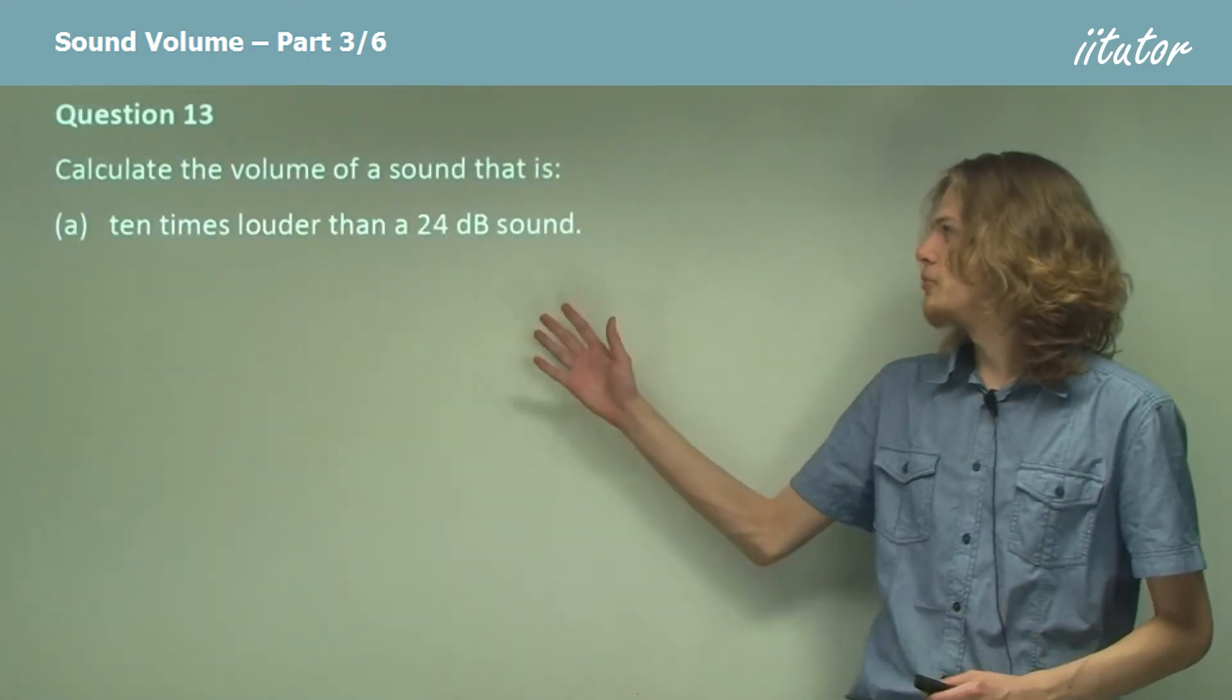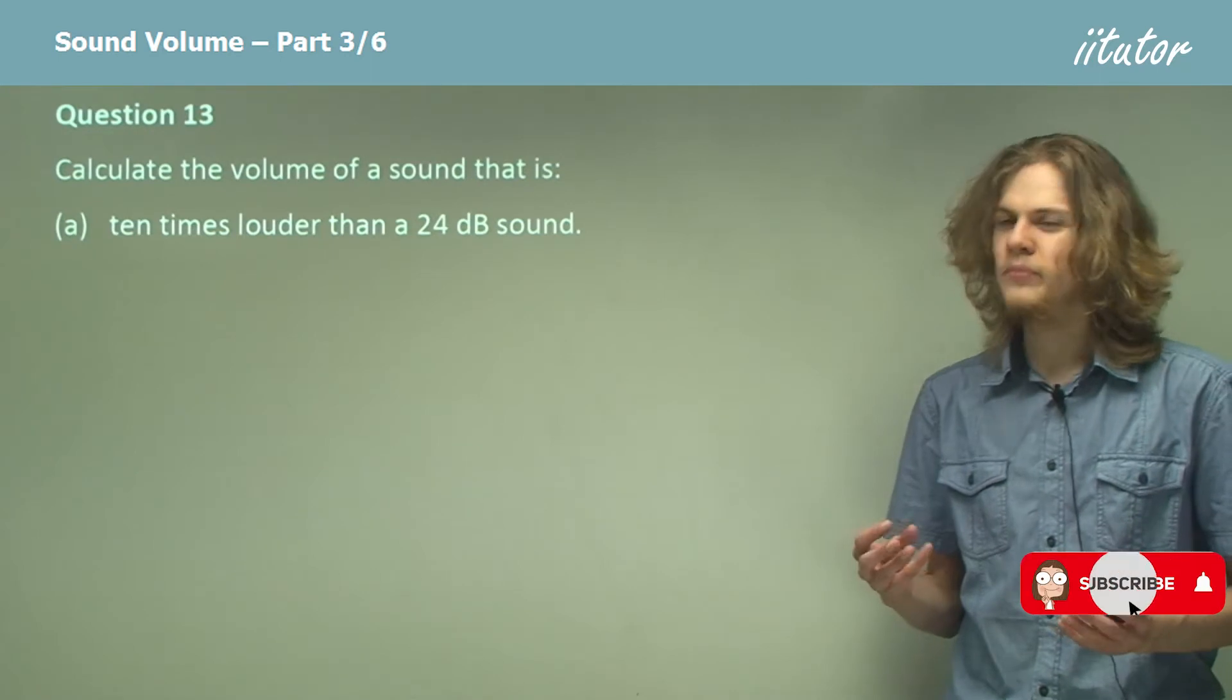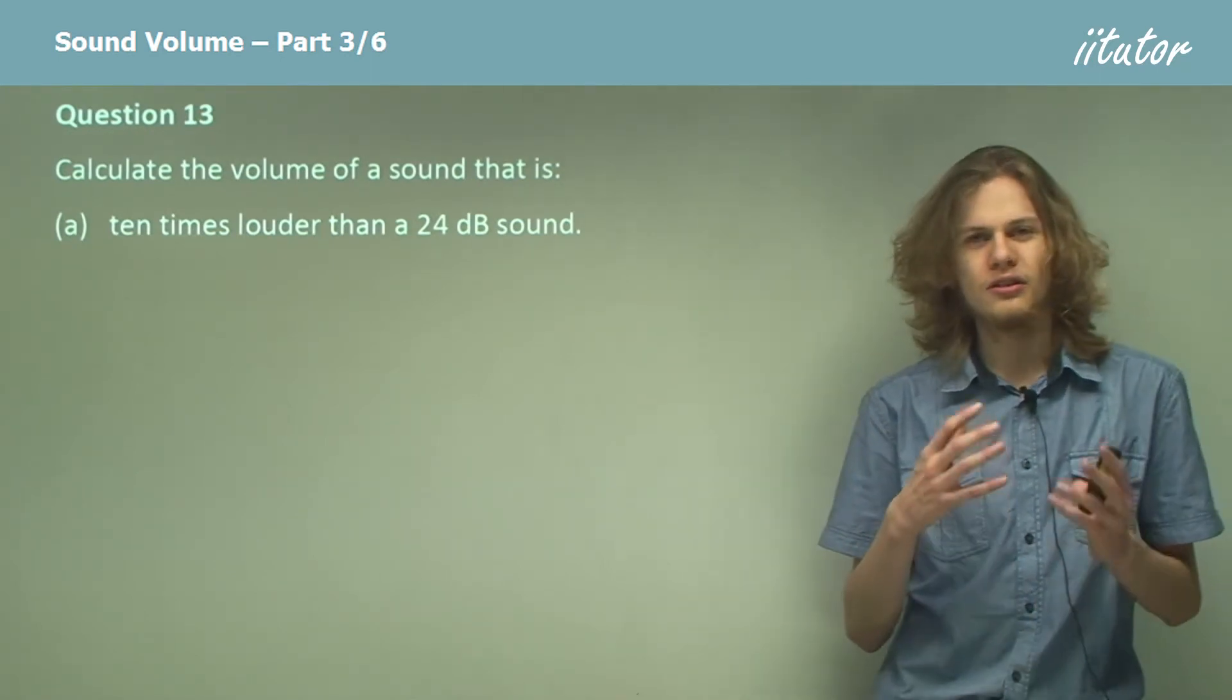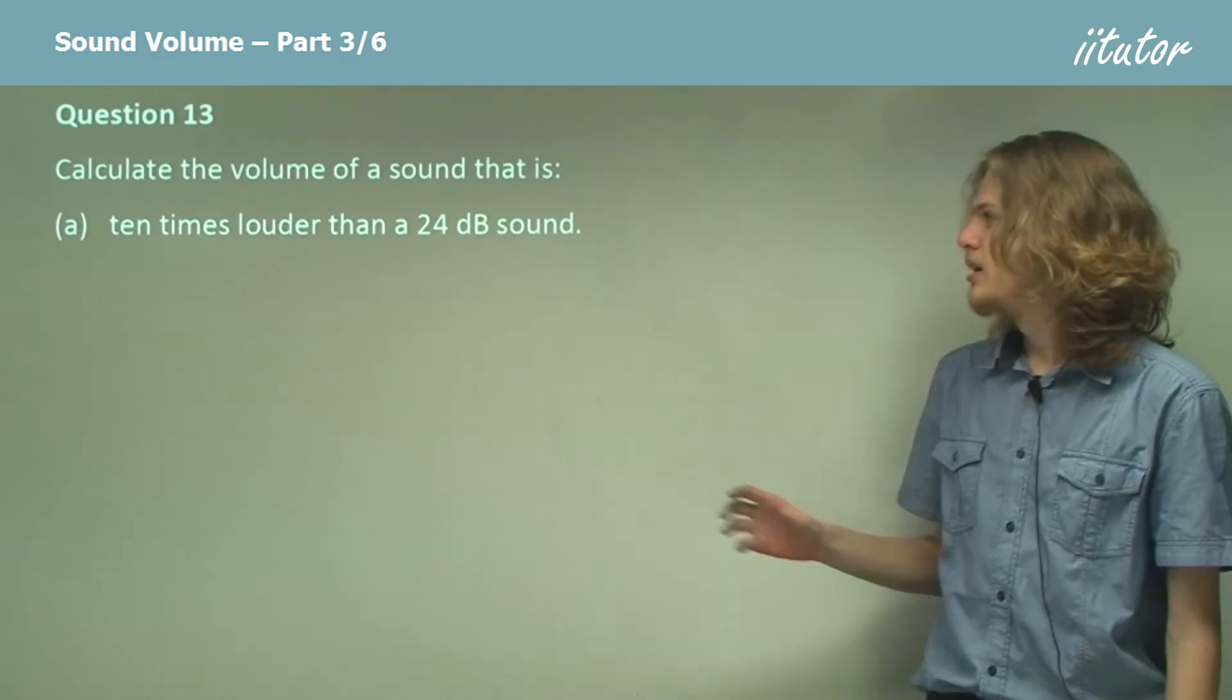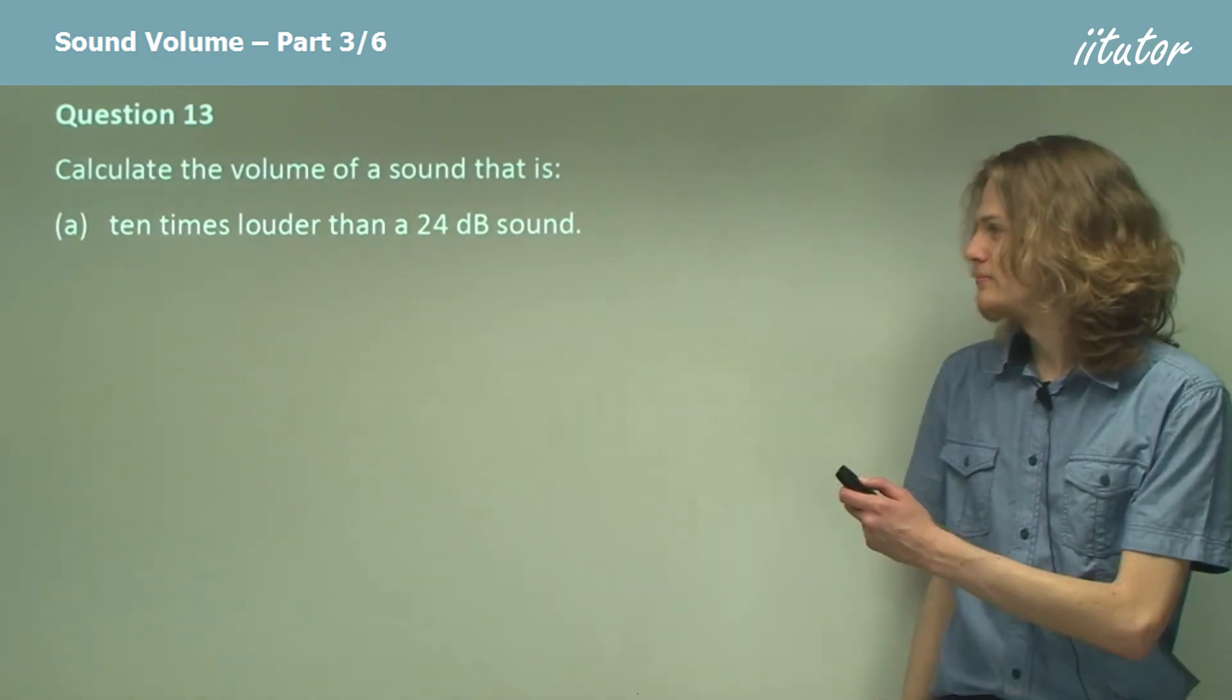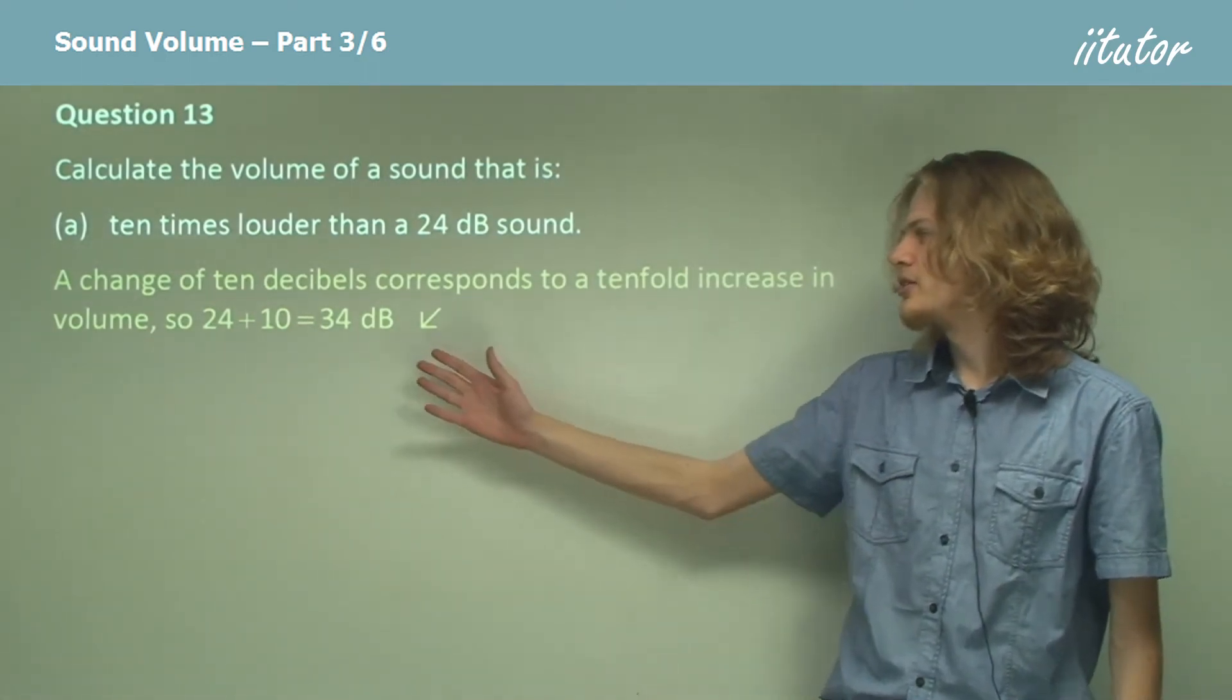Calculate the volume of a sound that is 10 times louder than a 24 decibel sound. Now I can remember how the decibels work: if we add 10 decibels, then we increase the intensity by a factor of 10. So if we want to be 10 times louder, that is 10 times more intense, then all we need to do is add 10 decibels. A change in 10 decibels corresponds to something 10 times louder, so we end up with a sound that is 34 decibels.